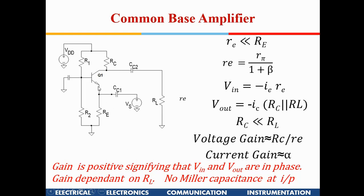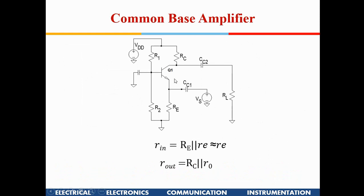The main advantage of the CB amplifier is no Miller capacitance at the input. There is no voltage gain as we move from the emitter input node to any other point — unlike the common emitter where there is a huge voltage gain from base to collector. Because the input is coupled to a low-impedance node at the emitter, there is no Miller capacitance, giving it high bandwidth.